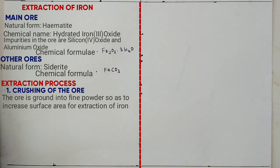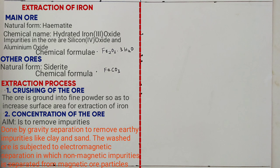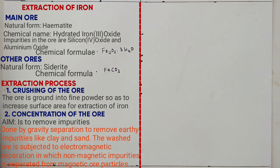Step 2 is concentration of the ore, whose aim is to remove the impurities. This is done by gravity separation process to remove impurities like clay and sand. Then the washed ore is subjected to electromagnetic separation.